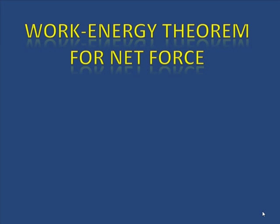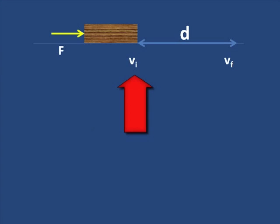This is called the work-energy theorem for a net force. And we can write FD equals the change in kinetic energy. And, of course, we started from initial velocity of zero. FD equals one-half MV squared. But this is general, and it doesn't matter if we start from rest.